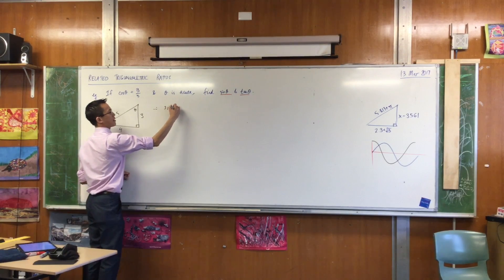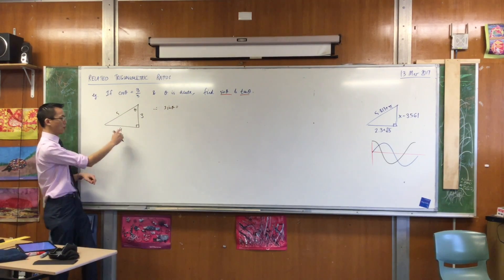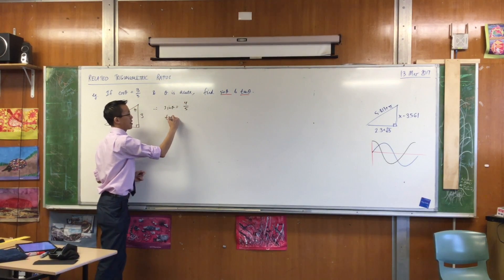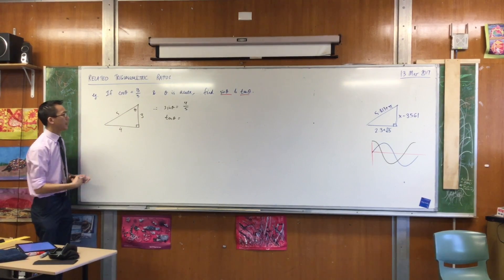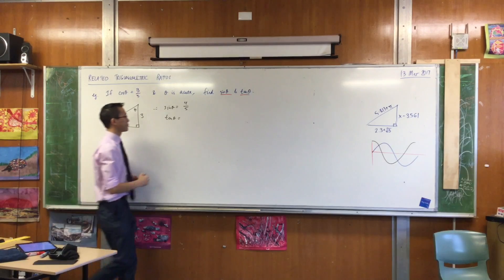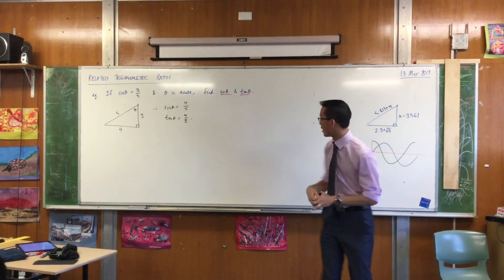So I can just say, therefore, sine theta equals, have a look, what's the ratio? It's opposite on hypotenuse. It's just 4 fifths. And in the same way, I can just read off tan theta. Tan theta is going to be opposite on adjacent, 4 over 3. Not rocket science, okay?